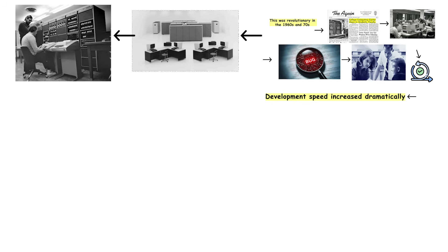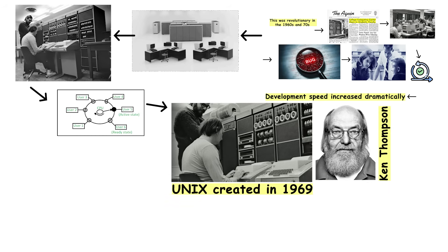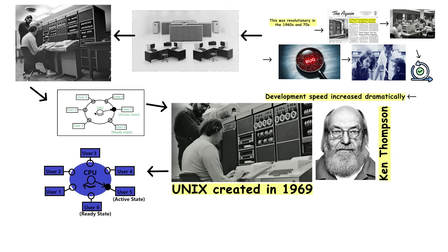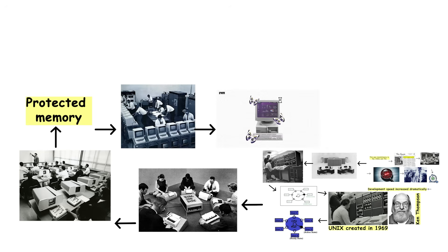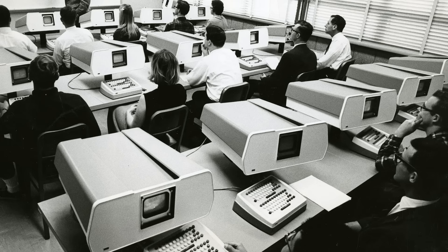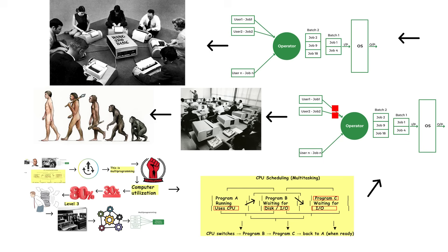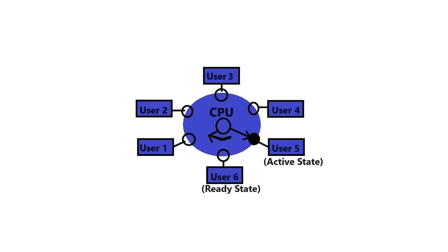Systems like Multics, the predecessor to Unix, pioneered time-sharing. Unix itself, created in 1969, was designed as a time-sharing system from day one — multiple users, multiple processes, protected memory, file systems with permissions. This is where modern operating system concepts were born. Level 3 people understand that operating systems manage resources and enable multiple programs to coexist, but they're still missing the user-focused evolutions that made computers accessible to regular people.